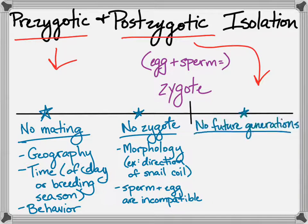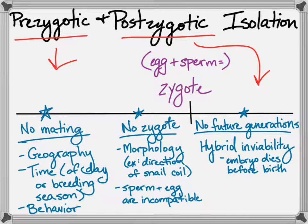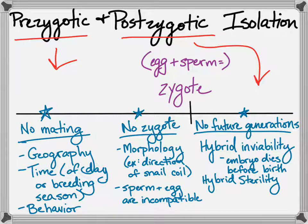The third category is no future generations. Two populations are hybridizing — they're mating together — and either their hybrids are inviable, meaning that embryo formed from the zygote dies somewhere from a few cell divisions in up to and before birth. Or the hybrids could be sterile. We might be familiar with tigons or ligers, but that F1 generation of offspring cannot reproduce, and so they're not considered a species by our biological species concept.